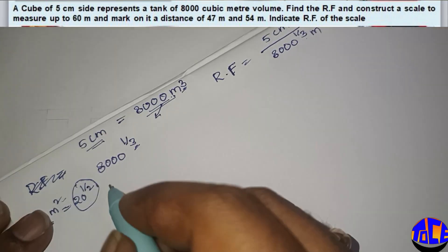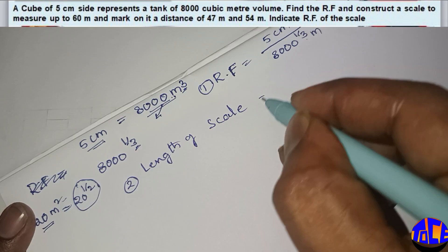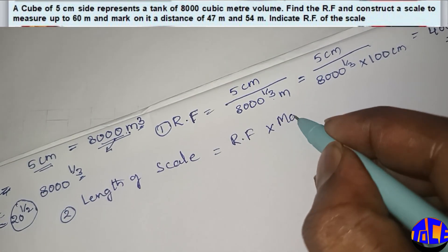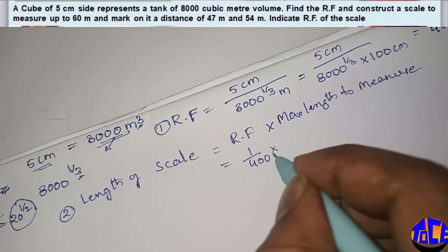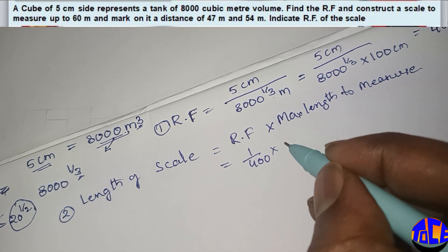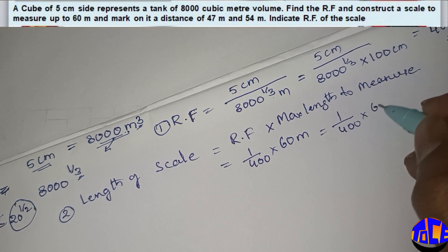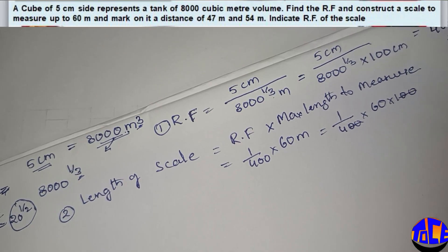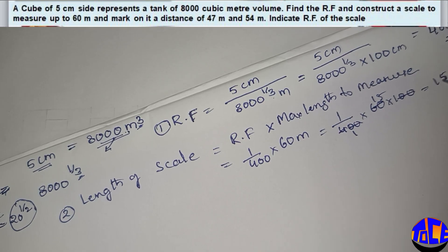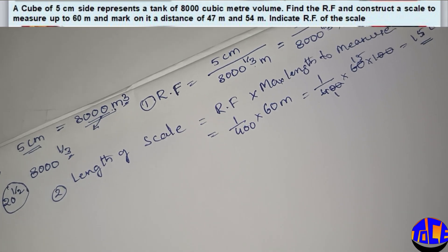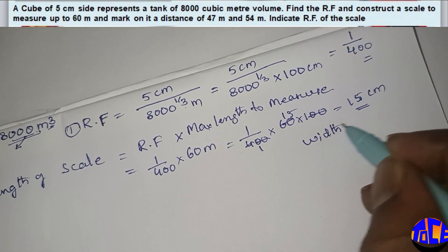Now the next thing: we need to calculate the maximum length of the scale. RF is the first point; the length of scale is the second. The formula is: RF into maximum length to measure. We know RF is 1 by 400 and the maximum length to measure is 60 meters. Converting to centimeters: 60 into 100, divided by 400, the two zeros cancel, giving 15 centimeters. So we need to construct a scale of length 15 centimeters and width 1 centimeter.